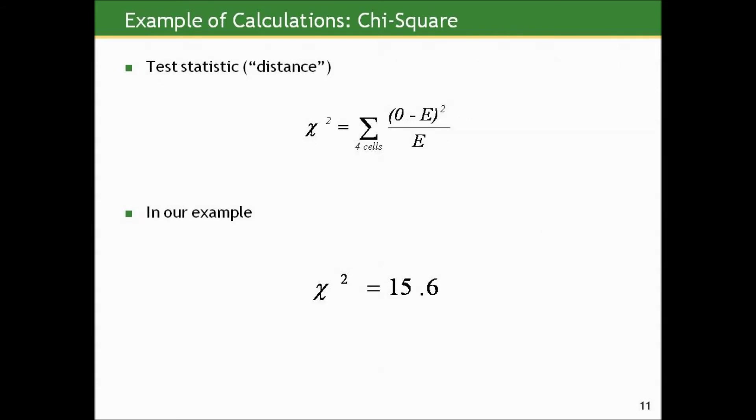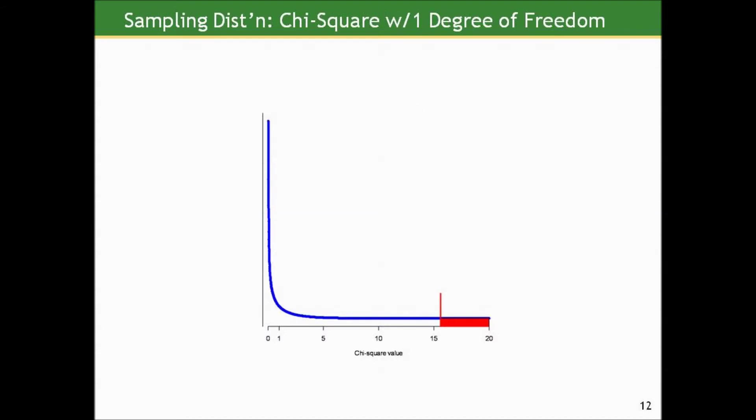So if we computed this test statistic, this distance, we actually then did this computation, which I'll never expect you to do by hand. I just want you to understand the idea behind it. We get a cumulative discrepancy of 15.6 across the four cells. So is that far away from what we'd expect under the null or not? Well, we have to look at where it falls relative to the distribution of this statistic under random sampling were the null true. If you look at that, it's pretty far on the right-hand tail there. And we're only going to consider results as far or farther away in terms of as likely or unlikely, and we get a very small swath of area under that curve.